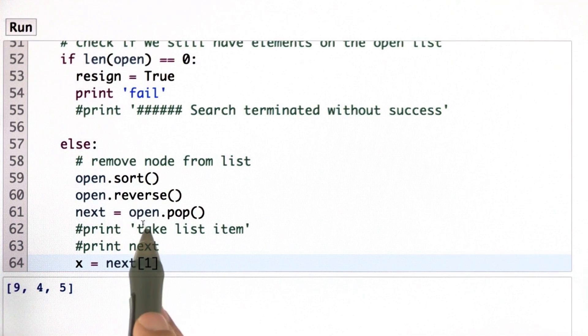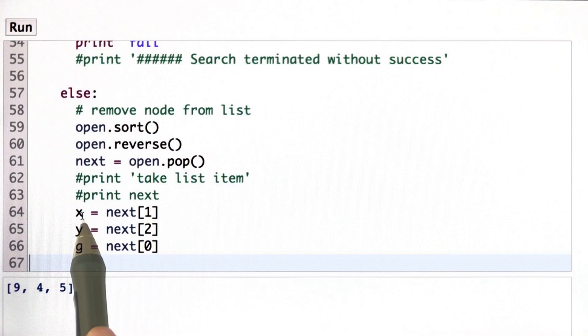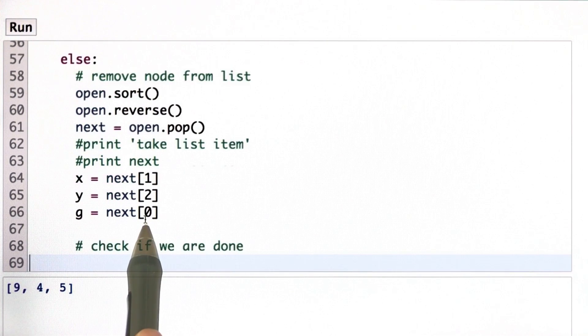That here gets me the element with the smallest g value. And for that it's important that the g value comes first in each of these triplets. That's why I put it first, before the x and the y. I then assign the three values to x, y, and g, which is my expansion. Again, g is the first, x and y are second and third.